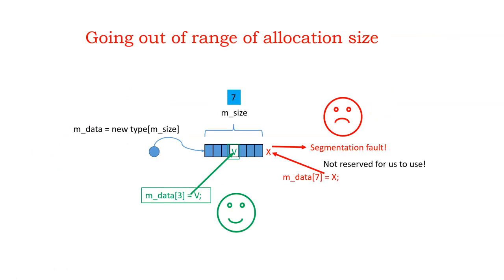Rule number three: always stay within the size of the memory you allocate and keep track of that size. If you have a size of seven, valid indices are zero to six — if you go to index seven you're actually at the eighth element, which is a segmentation fault. Always stay within the limits. You are lucky if it crashes immediately; the worst case is going one extra and it doesn't crash — it might crash seven years later when you're on vacation.